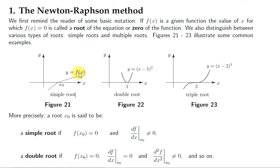Let x₀ be the root of the function y = f(x). If the first derivative of the function at x₀ is not 0, then we say that we have a simple root at x₀. You can see that the tangent to the curve at x₀ is not a horizontal line.